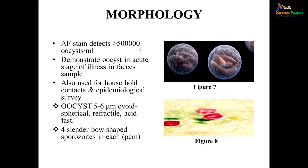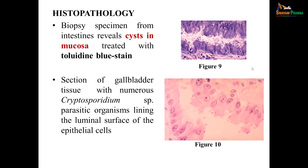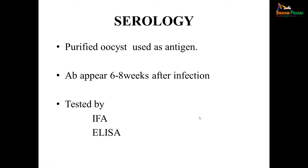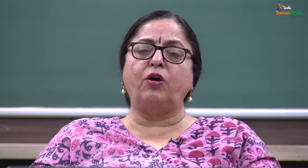Acid-fast stain can detect more than 500,000 oocysts per ml and demonstrates oocysts in the acute stage of illness. The oocysts are 5 to 6 microns in size, ovoid or spherical, containing up to 4 slender bow-shaped sporozoites. Histopathology can be done on biopsy specimens from the intestine, staining with toluidine blue or other stains to reveal cysts in the mucosa, even in gallbladder samples. For serology, purified oocysts are used as antigen to look for antibodies, which appear 6 to 8 weeks after infection, detectable by indirect immunofluorescence assay or ELISA.